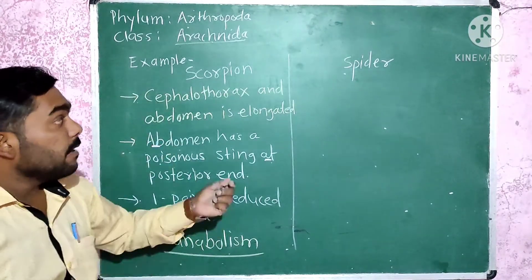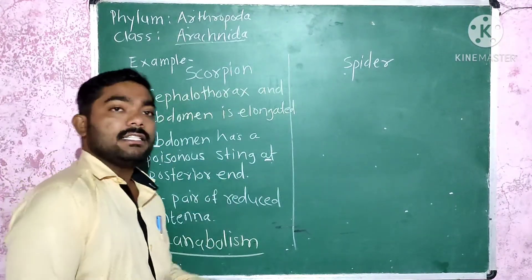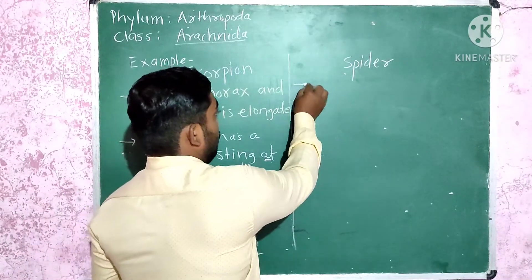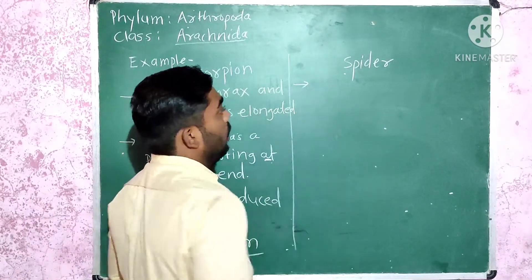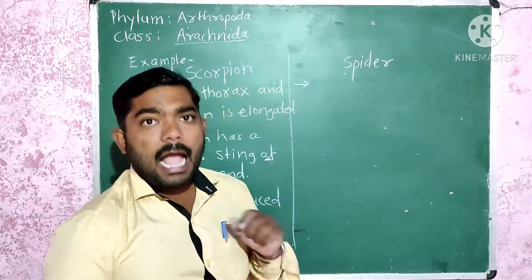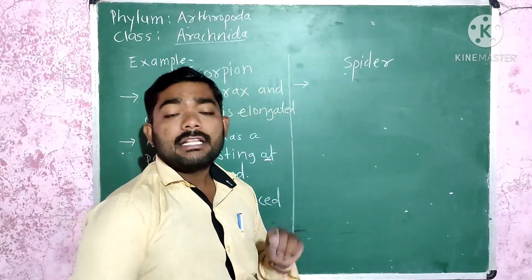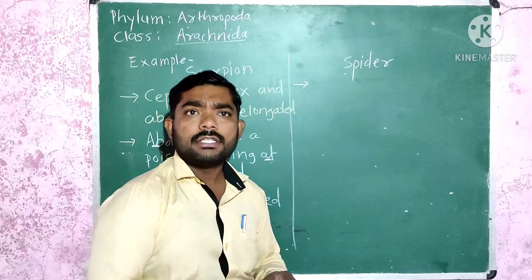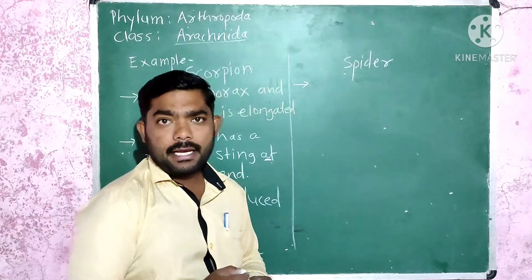Another example is the spider. The abdomen and thorax in the spider is very reduced — not elongated.